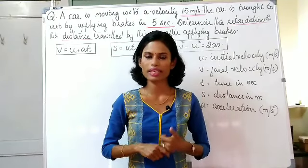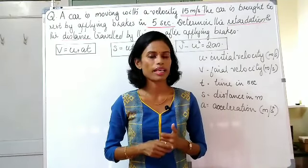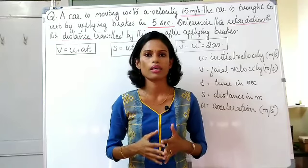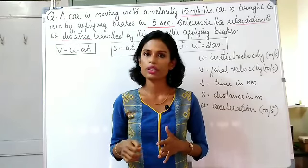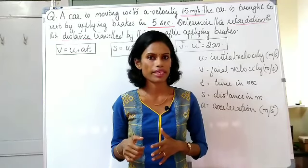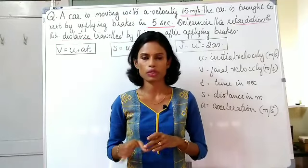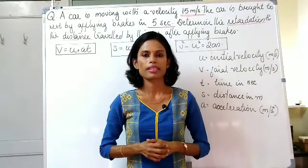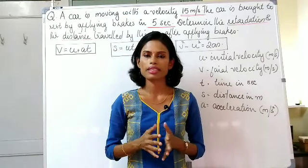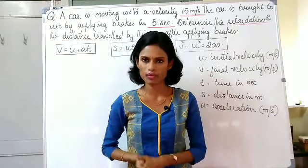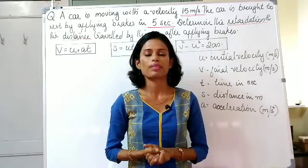Examples of linear motion include: a train on a railway track, a car moving on a road, and a coin tossed vertically upward. All these are examples of linear motion. There are certain terms associated with this — let's discuss them one by one.